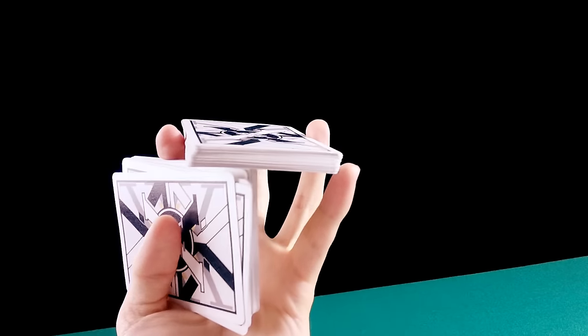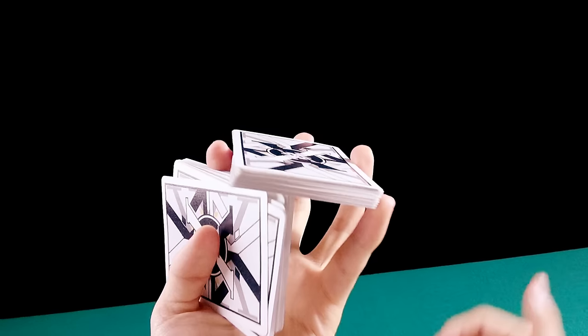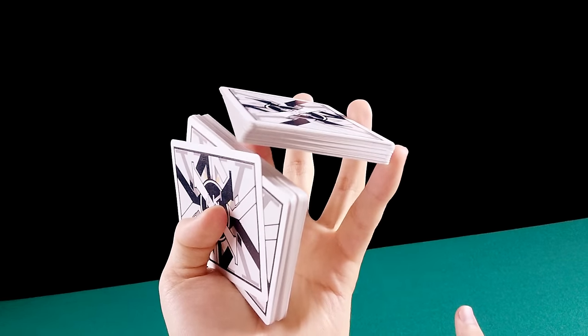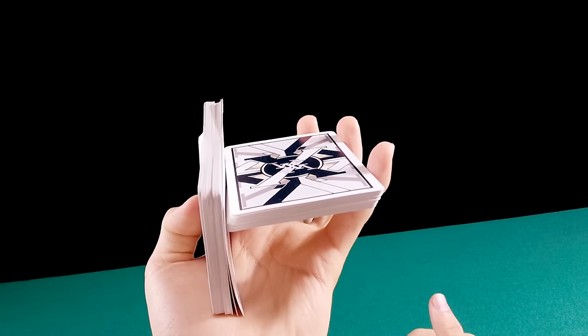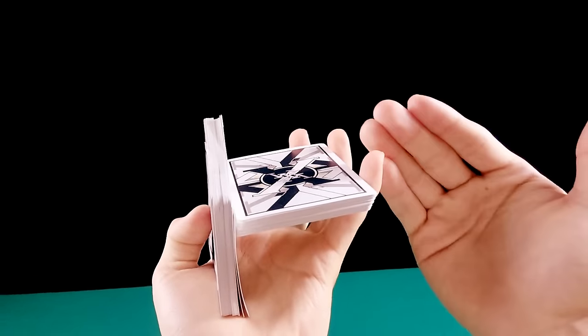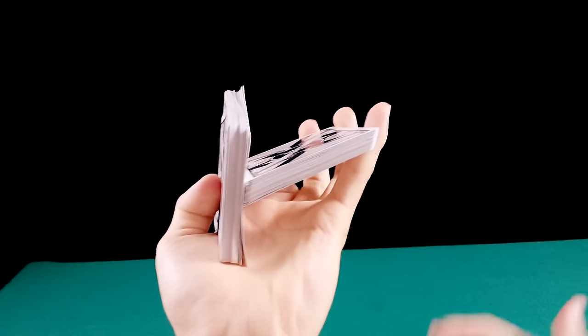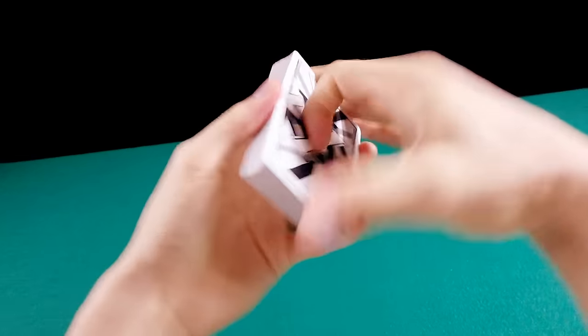Então gire. Lembrando que o dedo mínimo fica aqui. E o dedo médio também tem que ficar aqui para dar suporte. Quando for concluir o giro, o indicador vai descer. E você vai encostar esses dois montes aqui. Esses três dedos estão empurrando contra esse monte. E esse monte, o polegar está empurrando contra esses três dedos. Assim, você fecha de uma forma elegante o Revolution Cut.